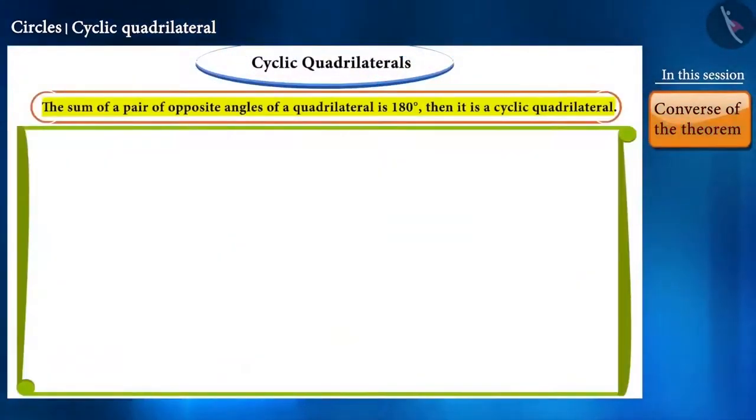Friends, now if it is said that the sum of a pair of opposite angles of a quadrilateral is 180 degrees, then it is a cyclic quadrilateral. Will this statement be correct? Let's see.